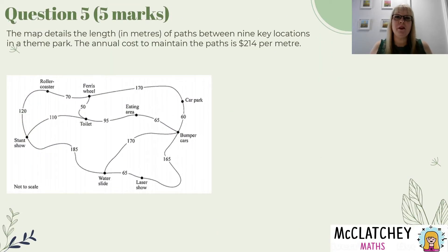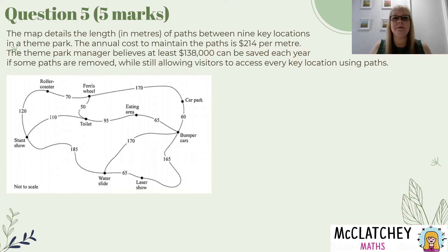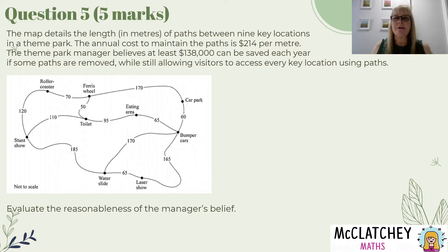Question 5 was worth 5 marks. The map details the length in metres of paths between 9 key locations in a theme park. The annual cost to maintain the paths is $214 per metre. The theme park manager believes at least $138,000 can be saved each year if some paths are removed, while still allowing visitors to access every key location using paths. We need to evaluate the reasonableness of the manager's belief.